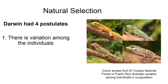Darwin really had four ideas, or four postulates. First of all, Darwin realized that there is a lot of variation among individuals within a population. If you look at these crown anoles from El Yunque National Forest in Puerto Rico, you can see that there's a lot of variation among these individuals that we found within one mile of the road. Darwin realized all this variation among individuals from making thousands of observations as he collected organisms and sent them back to Great Britain.